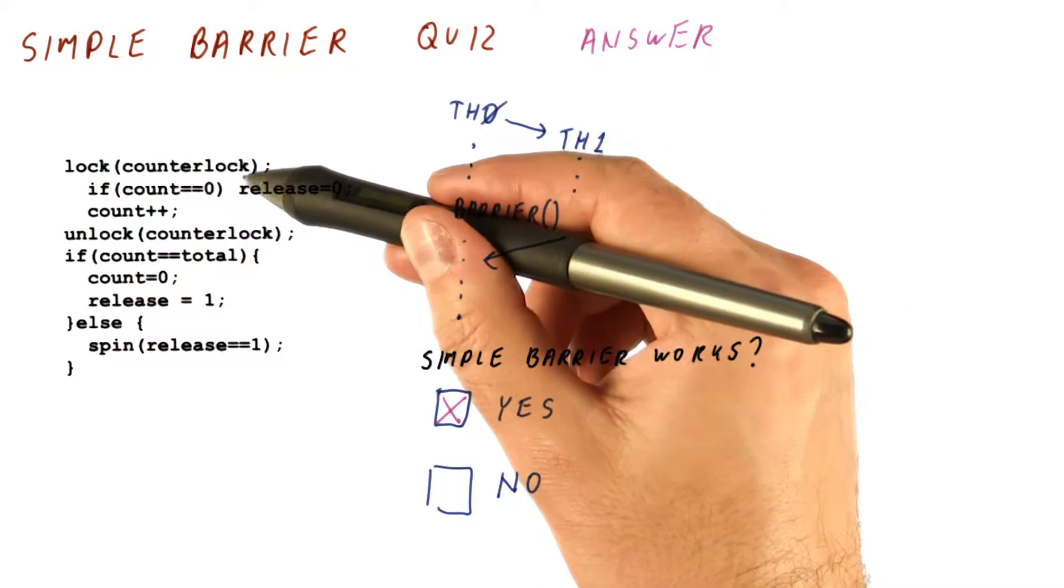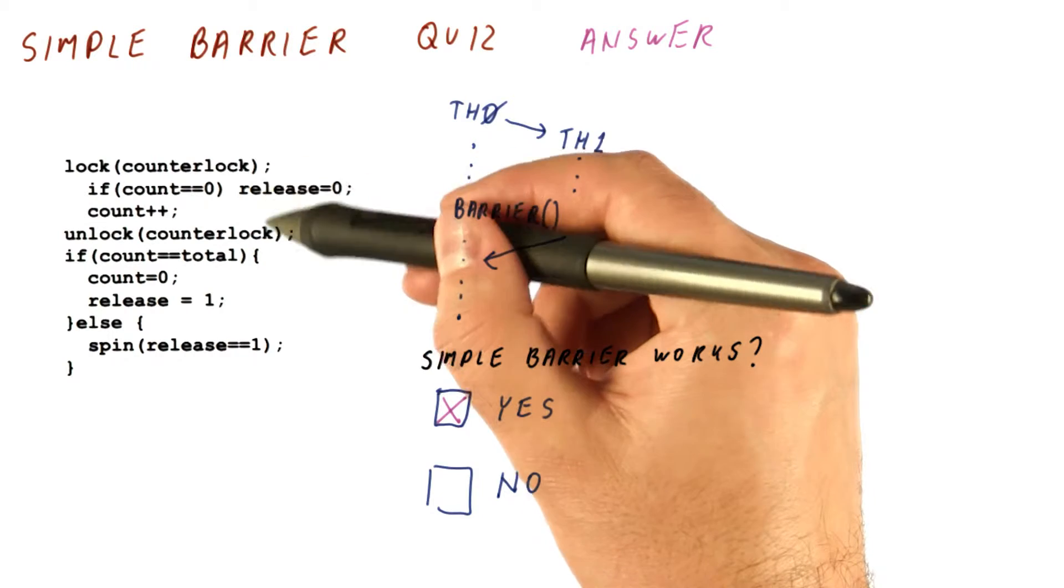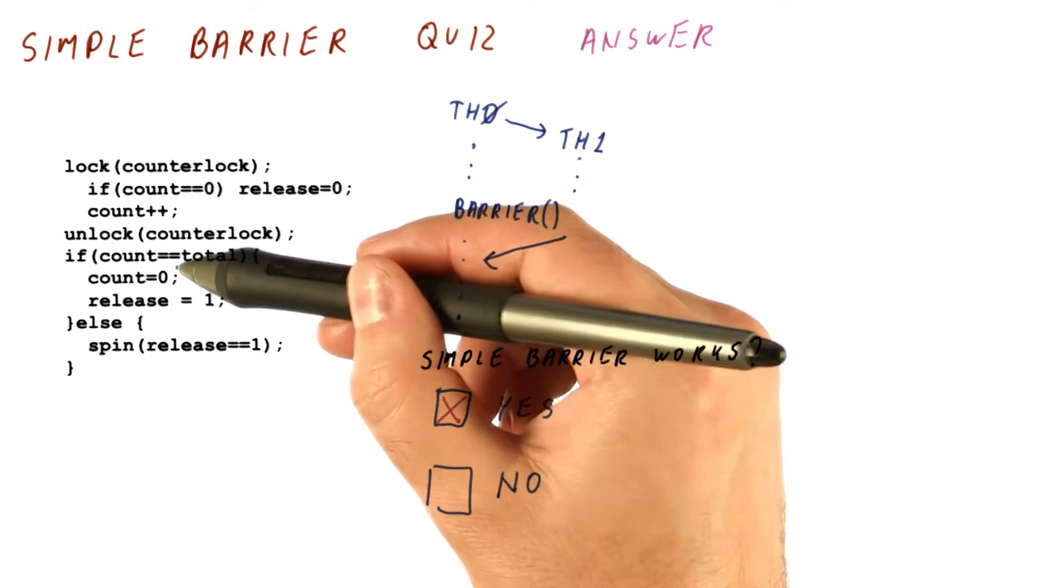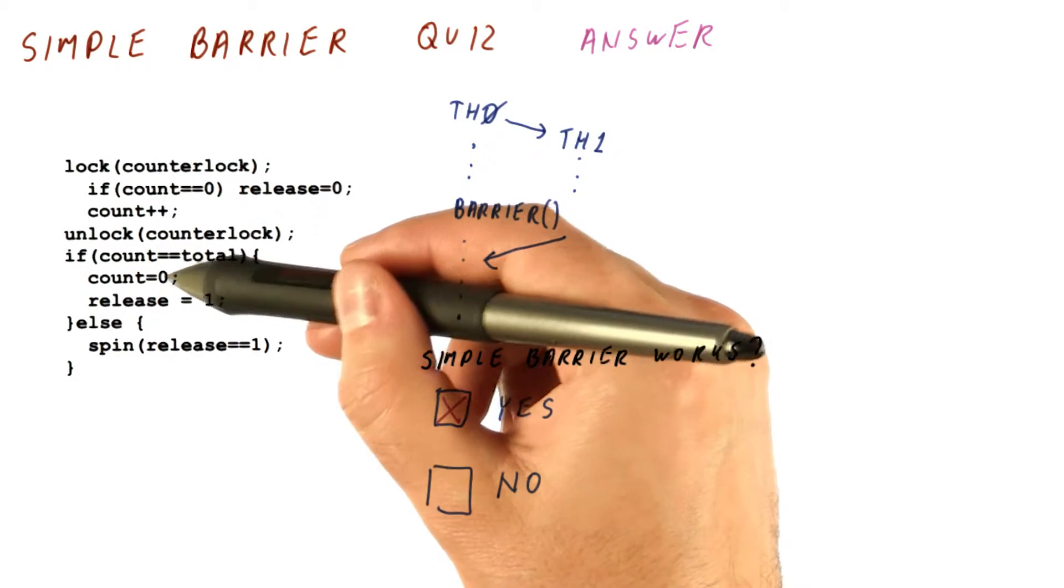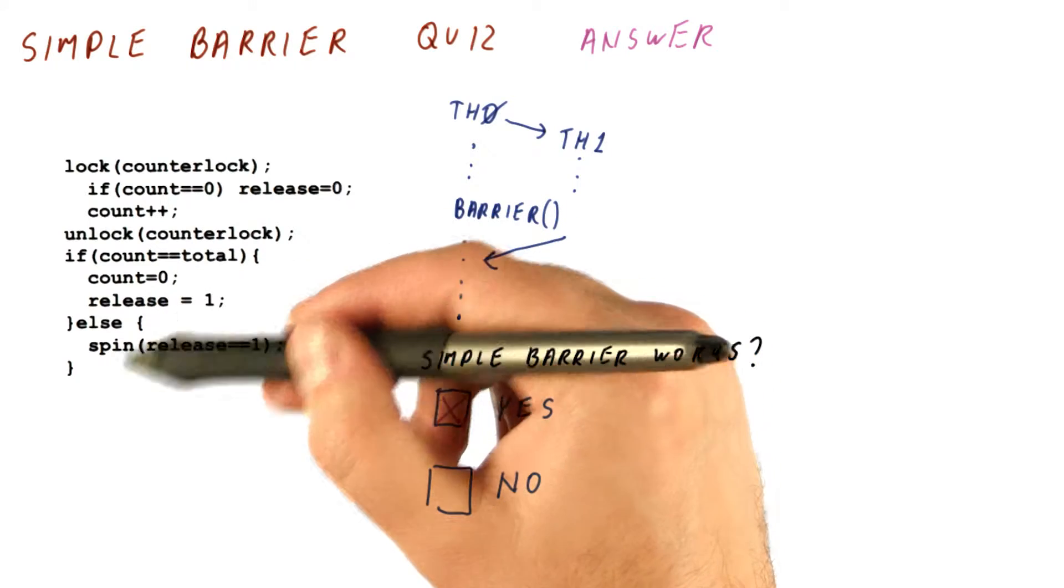Or it might happen that both of them execute this in very close proximity to each other. Both of them now see the new count of two, and then both of them release and exit the barrier.